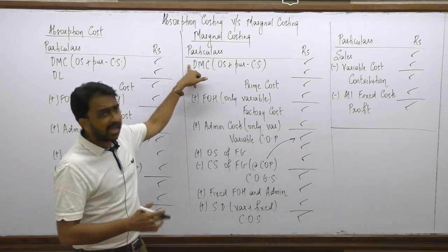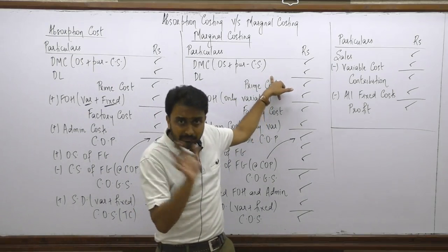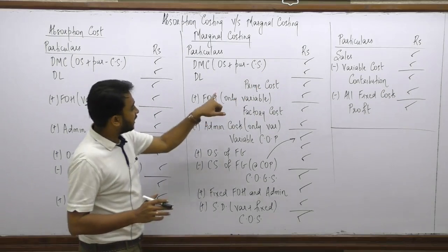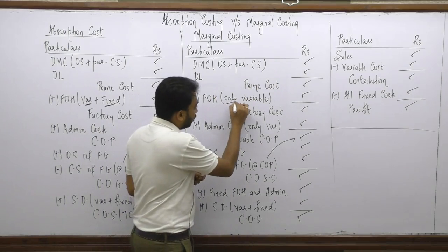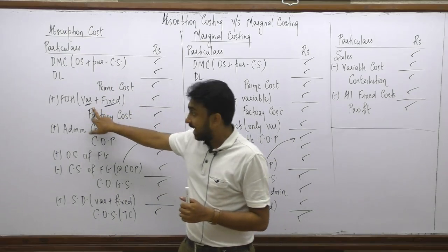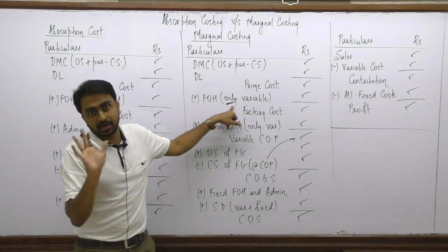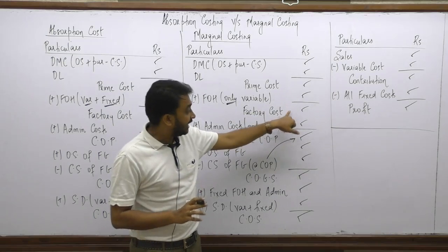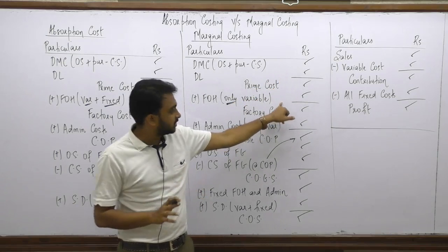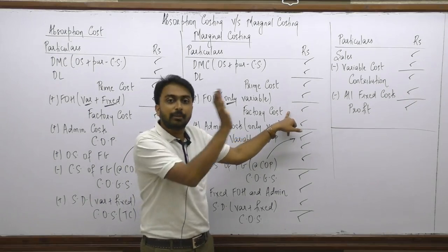Starting the marginal costing format: we have direct material consumed as usual, and direct labour as usual. Both are direct costs and both are variable costs, so they come into prime cost. DM and DL are never fixed costs. For factory overheads, we add only the variable content. Unlike absorption costing where we use variable plus fixed FOH, in marginal costing we add only the variable factory overhead. So the factory cost contains only DM, DL, and variable overheads — no fixed content.